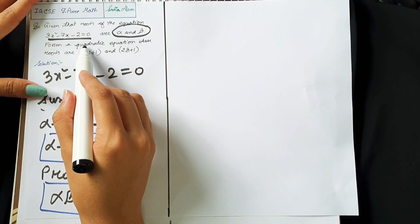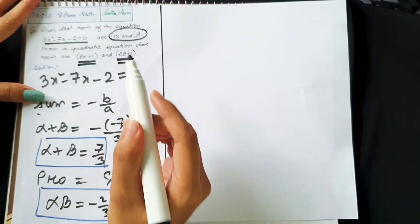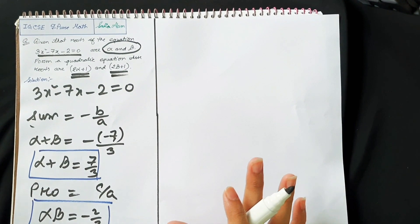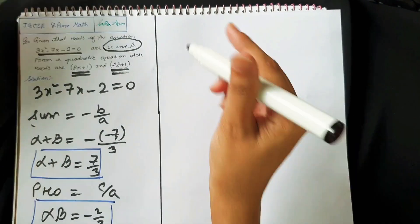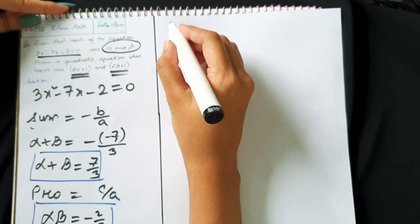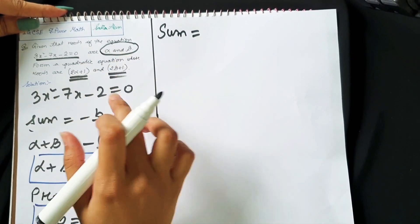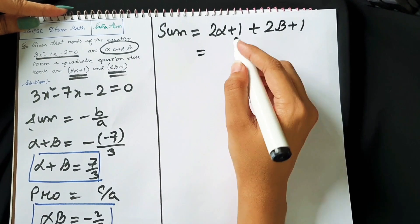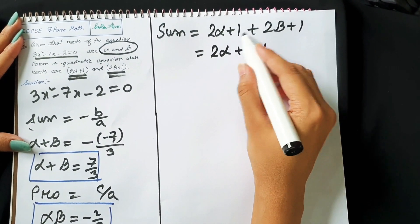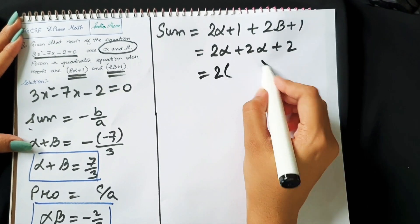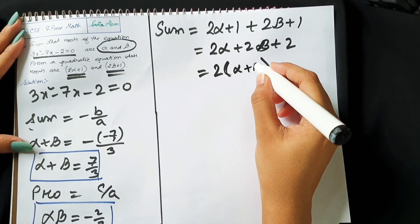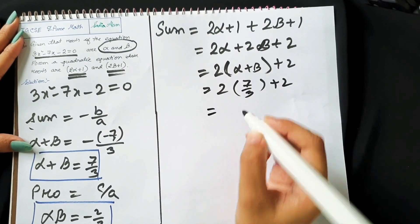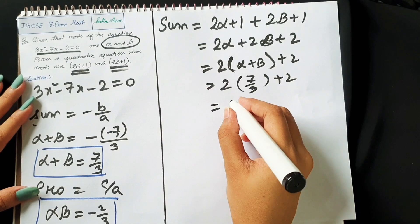Now we need to find a new quadratic equation with roots 2α plus 1 and 2β plus 1. For any quadratic equation we need to find the sum and the product. The sum of the new roots is (2α plus 1) plus (2β plus 1), which equals 2α plus 2β plus 2. Taking 2 common gives 2(alpha plus beta) plus 2. Substituting alpha plus beta equals 7 by 3, we get the sum equals 20 by 3.